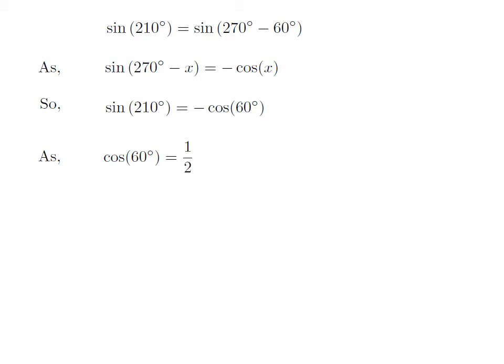We know the value of cosine of 60 degrees is equal to half. So, sine of 210 degrees is equal to minus half.